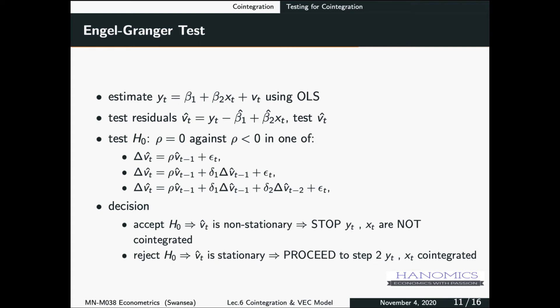And then what we want to do, we want to test these residuals, we test them for stationarity. So in this regression here, we could test delta V hat equal rho V hat T minus one, so you have got only one lag here, we can add more lags, and then you will see the decision. If you accept, that means it is non-stationary, that means you can't go to the next step, because that means the error term is not stationary.